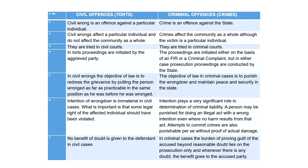In civil wrongs, the objective of law is to redress the grievance by putting the person wronged as far as practicable in the same situation as the person would have been had the offense not taken place. So the objective of civil law is redressal of grievances — restitution — whereas the objective of criminal law is to punish the wrongdoer. Under criminal law, it is the responsibility of the state to maintain peace and security, so the wrongdoer is to be apprehended and punished as per the law of the land.